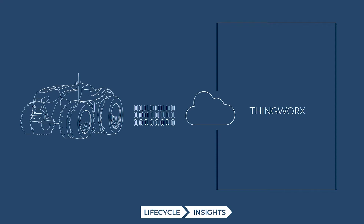One way that you can mimic the behavior of that tractor out in the field is to use Integrity Modeler. It's now part of Windchill, but with Integrity Modeler you can build these 1D system simulations that are almost like diagrams with inputs and outputs — all equation or formula based. You can build those models and then run them next to ThingWorx using what's called a headless application.